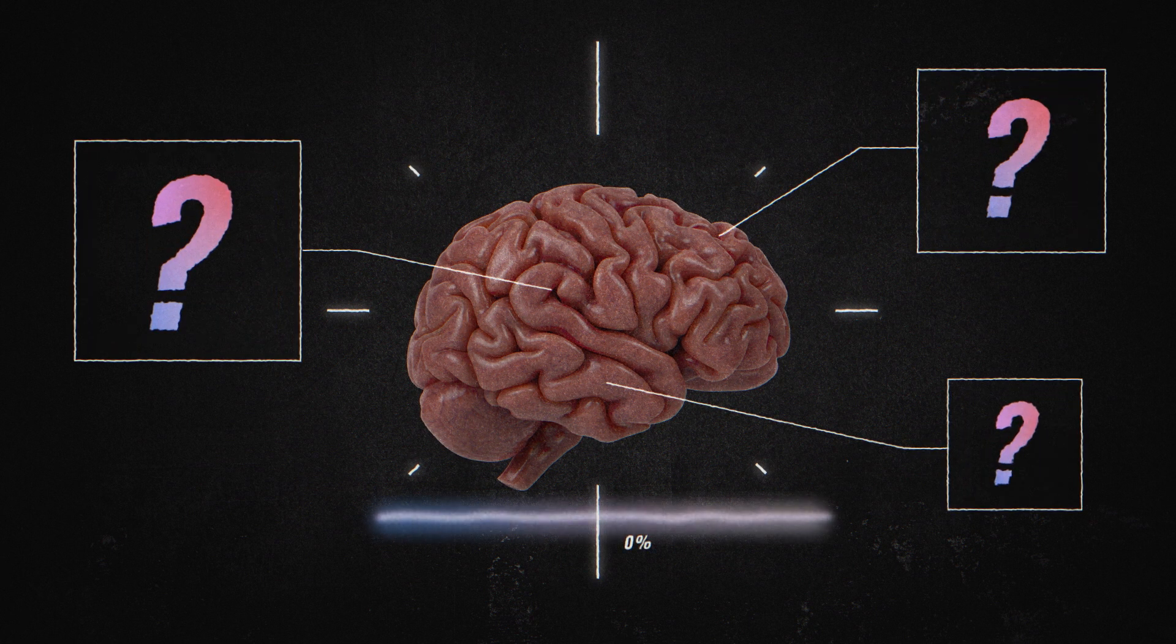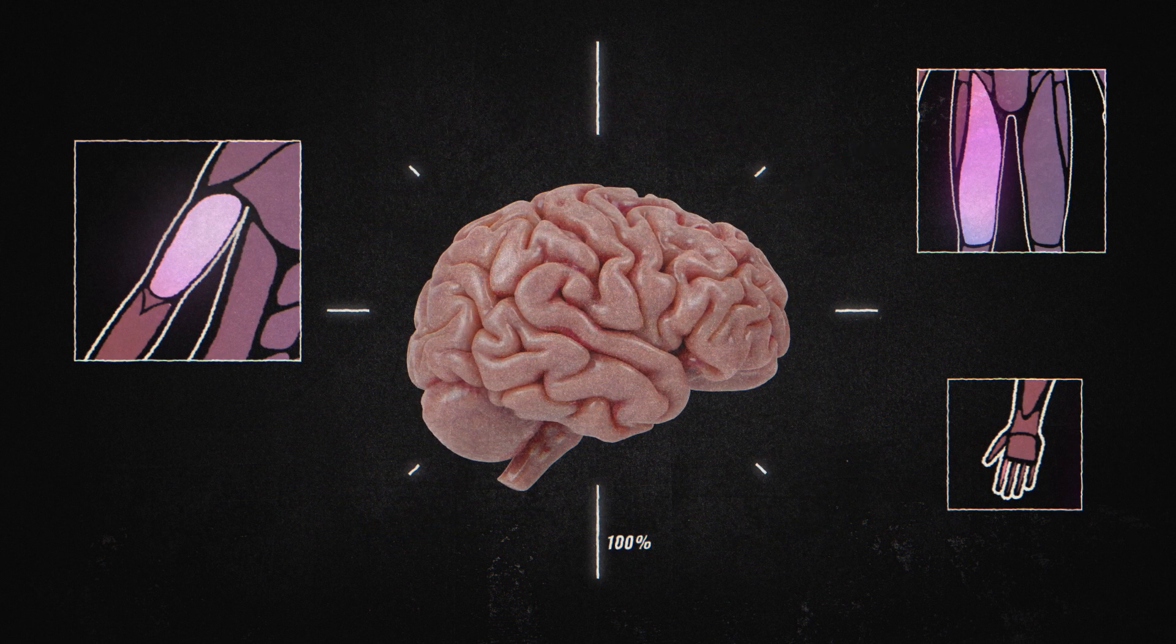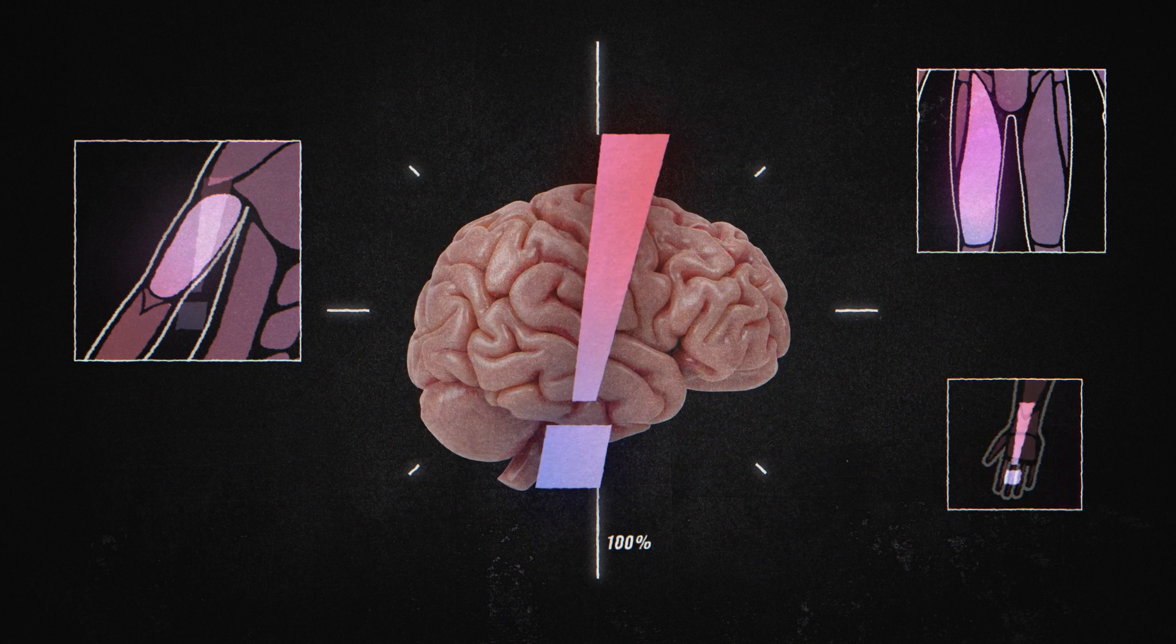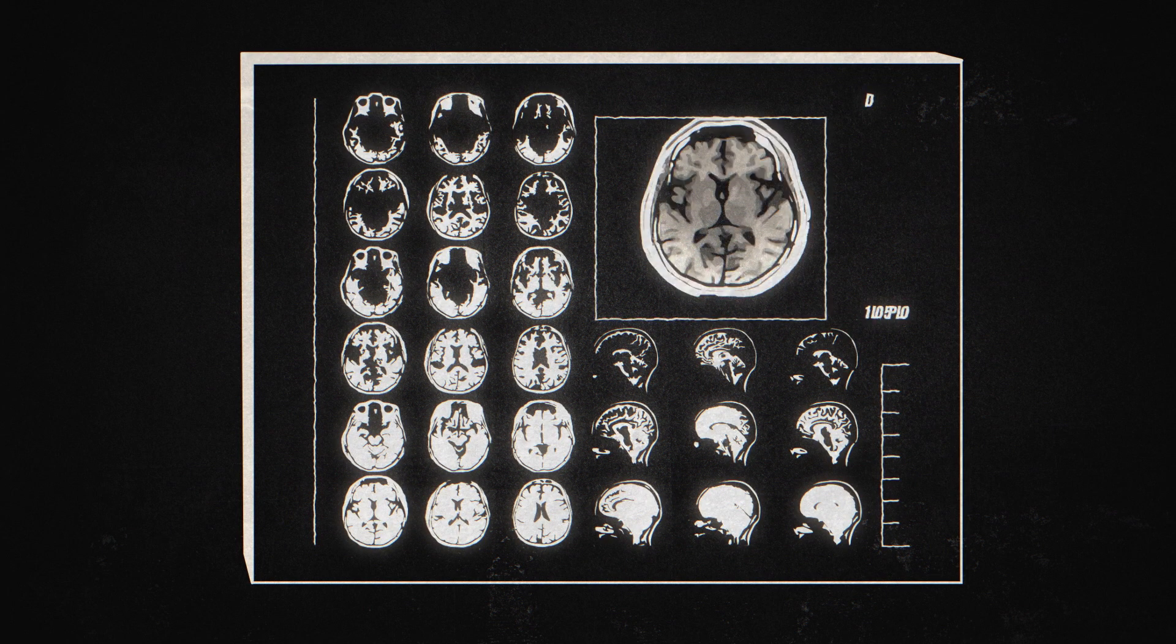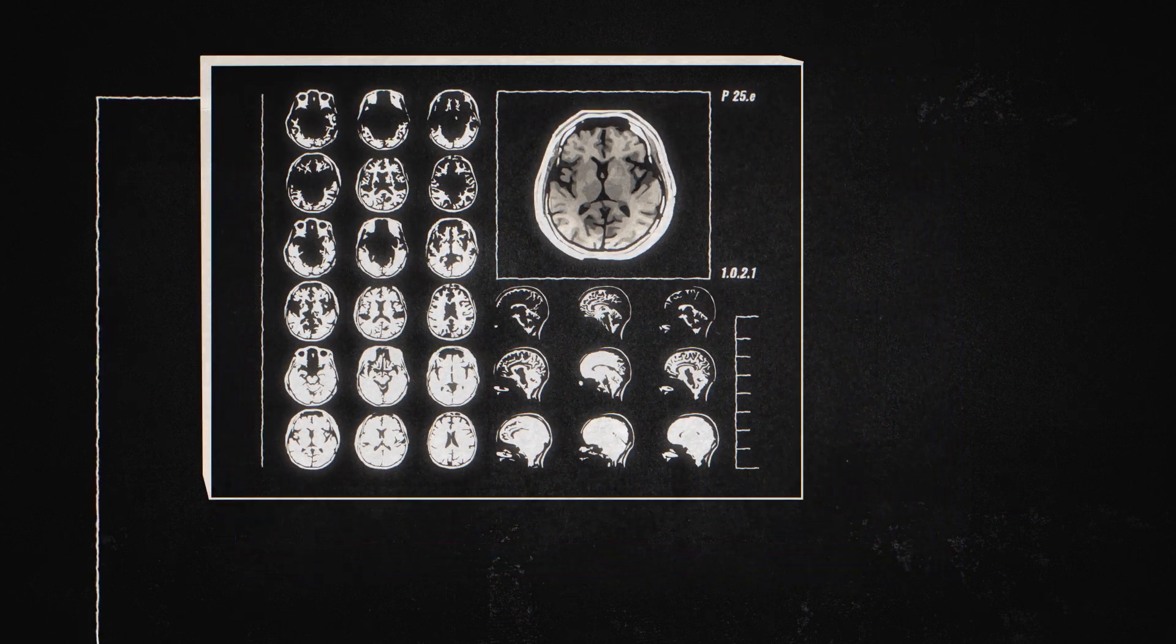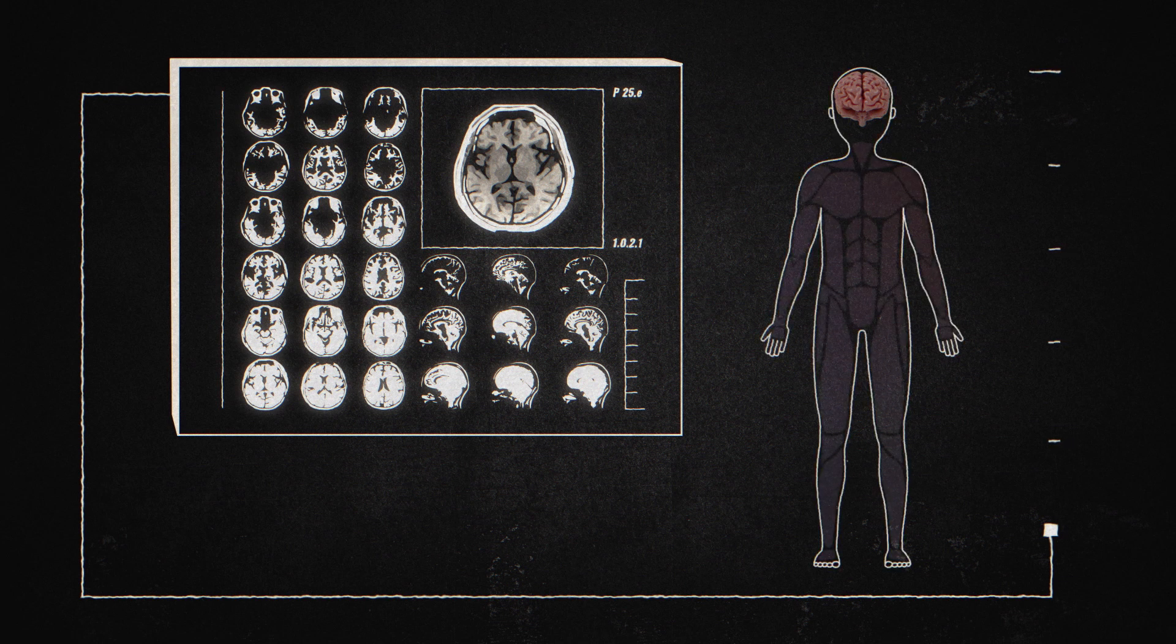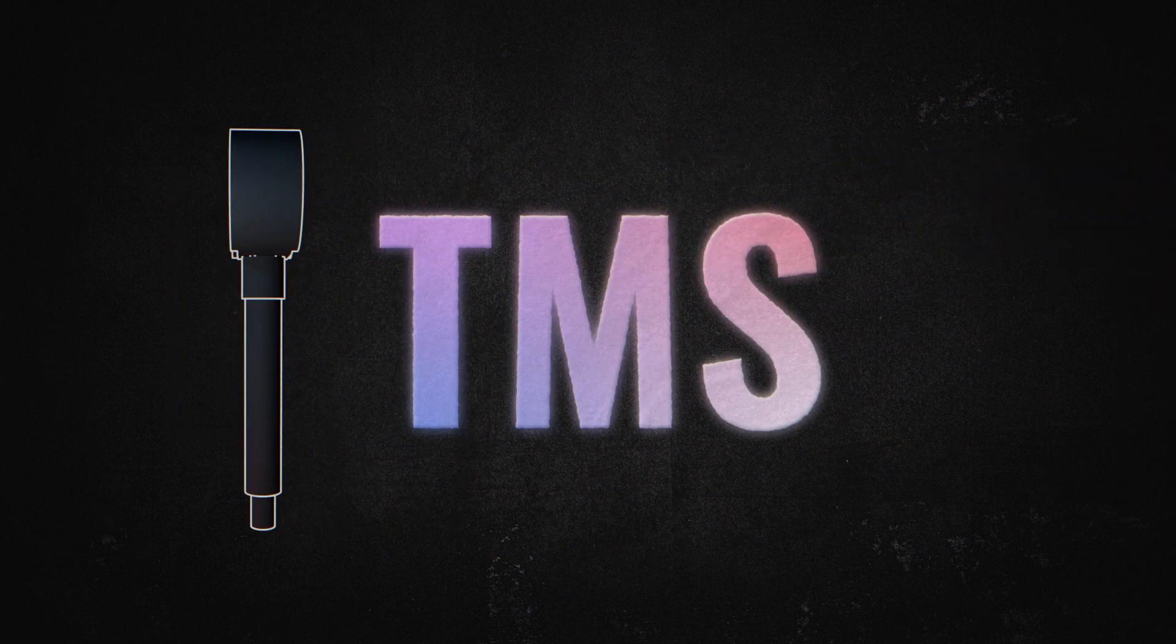For example, the areas responsible for muscle control will be identified. This is important because, in the case of the brain, what is once damaged is difficult to repair afterwards. First, an MRI scan of Tim's brain is taken to visualize its structure. However, this does not clearly identify which parts of the brain are responsible for which muscles. This is where transcranial magnetic stimulation comes into play.